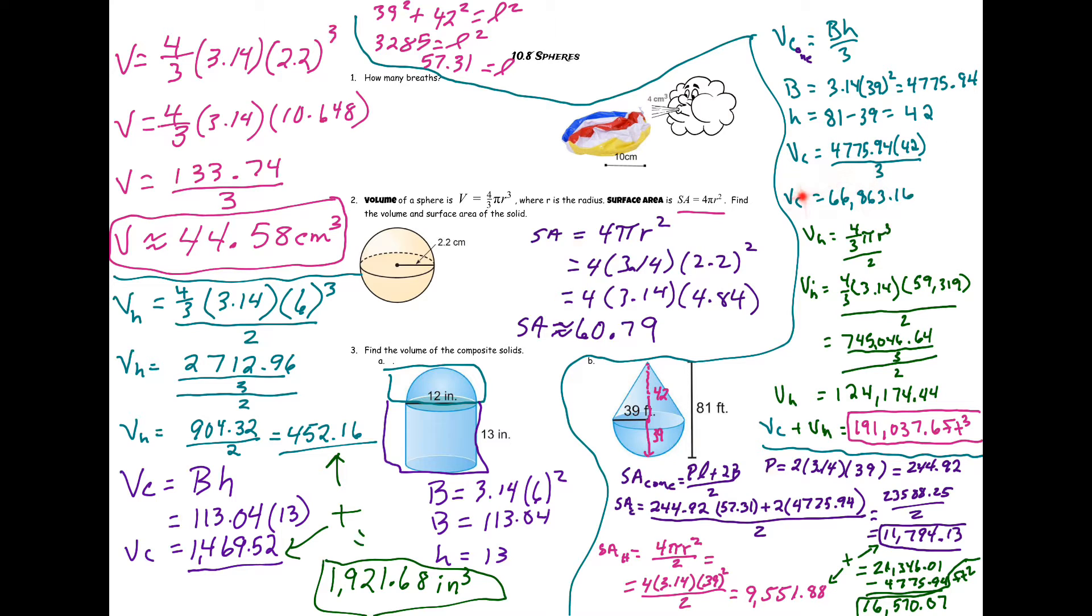And then you plug it into the formula and you get 66,863.16. Volume of the hemisphere is just going to be your four thirds pi r cubed, but since it's just a half of a sphere, divided by two at the end.